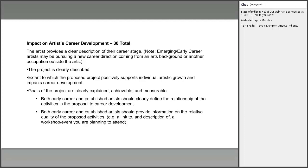The first criterion is impact on the artist's career development, worth 30 points. The artist should provide a clear description of their career stage — whether emerging, early career, or coming from another occupation. The project should be clearly described, with a clear explanation of how it positively supports individual artistic growth and career development. Goals should be clearly explained, achievable, and measurable. Both early career and established artists should clearly define the relationship of proposed activities to their career development.